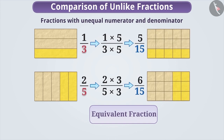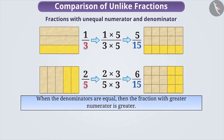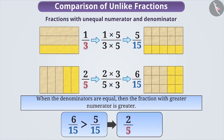Here, the denominators are equal. When the denominators are equal, then the fraction with the greater numerator is greater. Since the numerator 6 of 6 by 15 is greater than the numerator 5 of 5 by 15, therefore the fraction 6 by 15 is greater than 5 by 15. Thus, the fraction 2 by 5 is greater than 1 by 3.